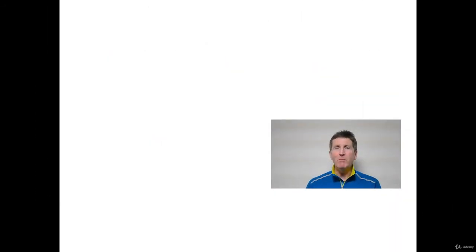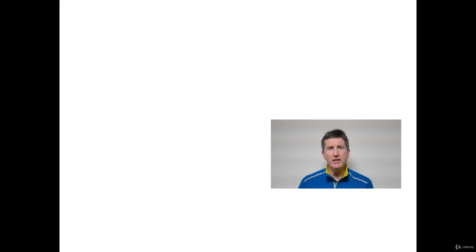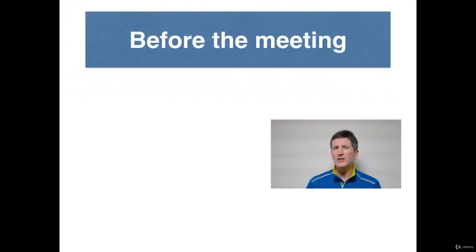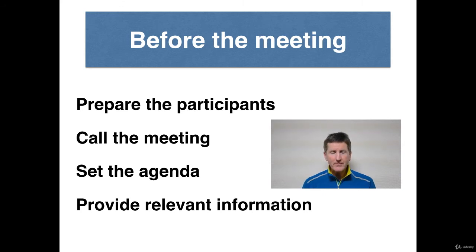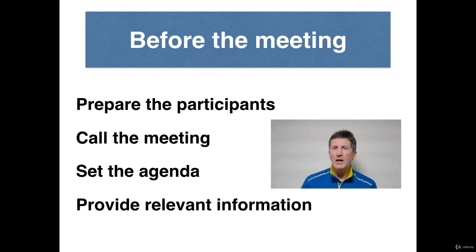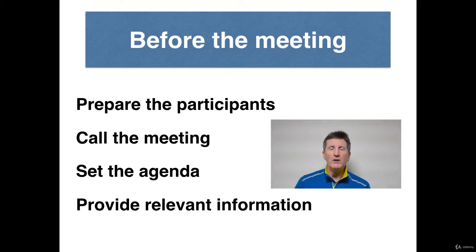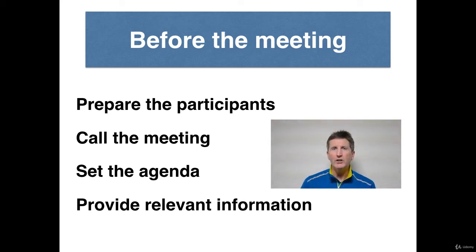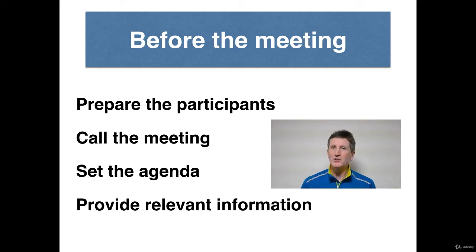Now you know the three main purposes for a meeting. What we want to do next is show you how to prepare for the meeting. It's an important job for the facilitator to prepare the participants to run the meeting in the most effective way. This includes calling for a meeting, setting the agenda, and sending any relevant information. This will help the participants do their own preparation. In the following slides, we will show you some emails with useful language for brainstorming, giving out information, and reaching an agreement.